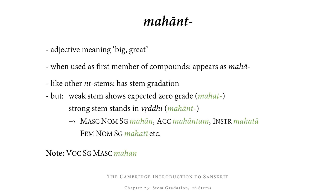The feminine forms of mahānt are formed on the basis of the zero grade — the weak stem — so we get mahatī, mahatī, mahatī, mahatyā, and so on, declining just like nadī. Note that the vocative singular masculine of mahānt is mahān, so here we do actually get guna instead of vṛddhi.